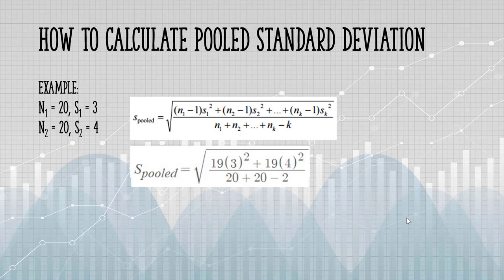For the denominator, we add the two sample sizes, and subtract k, which is 2. That represents our two samples.